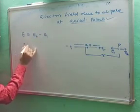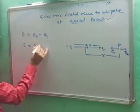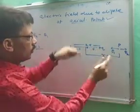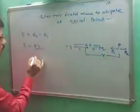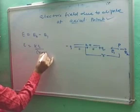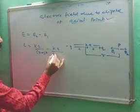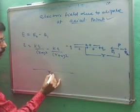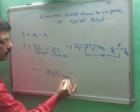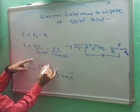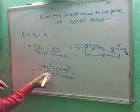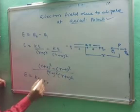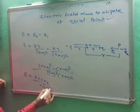The total electric field E equals E2 minus E1, which is KQ divided by (R minus A) squared, minus KQ divided by (R plus A) squared. Taking the LCM as (R minus A) squared times (R plus A) squared, and expanding gives E equals K times 4RA divided by (R squared minus A squared) squared.